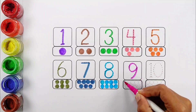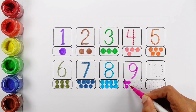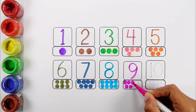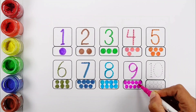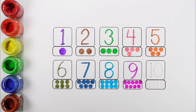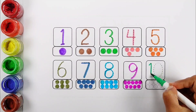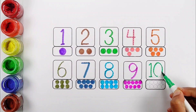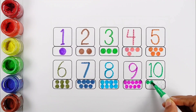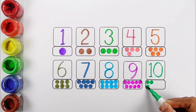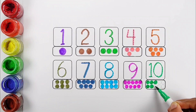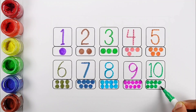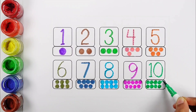Number nine — one, two, three, four, five, six, seven, eight, nine. Nine circles. Number ten — one, two, three, four, five, six, seven, eight, nine, ten. Ten circles.